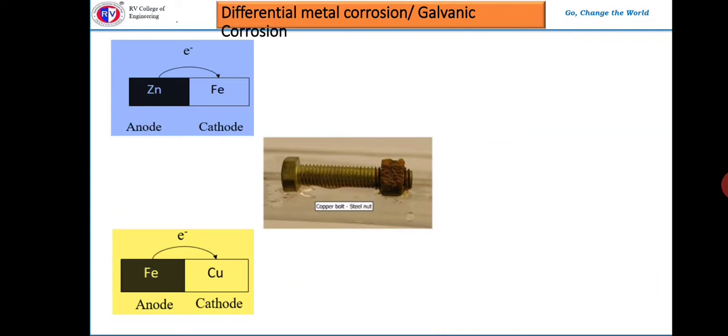A bimetallic piece like zinc and iron exposed to a corrosion environment: the metal having low reduction potential acts as anode and the other metal acts as cathode. The reduction potential of zinc is around minus 0.76 V whereas iron is about minus 0.4 V, that is why zinc acts as anode and iron acts as cathode. For iron and copper, electrons migrate from iron to copper — iron acts as anode, copper acts as cathode. Copper has a reduction potential of 0.34 V whereas iron is around minus 0.404 V.